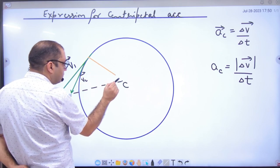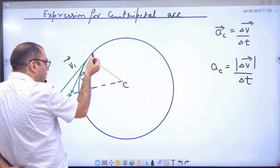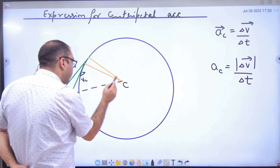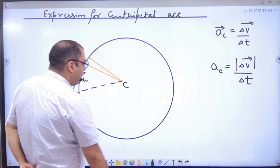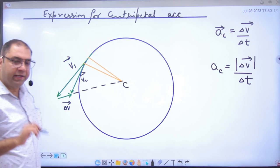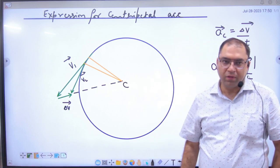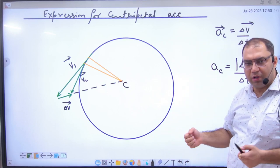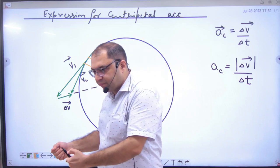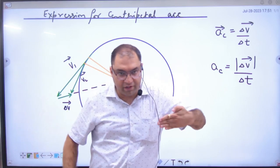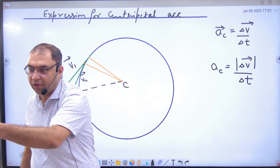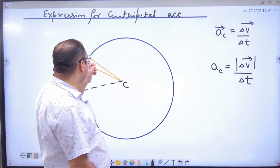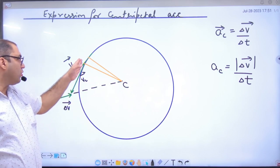Suppose at this instant the velocity is V1 vector, and the next instant the velocity is V2 vector. So V1 vector changes to V2 vector. These two vectors start at two different points on the circle — V1 vector starts here, V2 vector starts there — and they are tangent to the circle at those respective points.